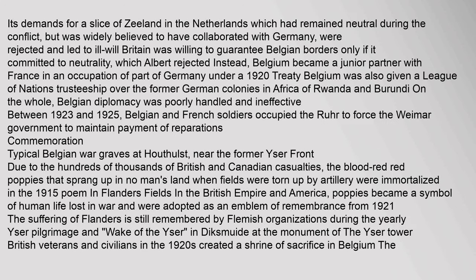Belgium's demands for a slice of Zeeland in the Netherlands, which had remained neutral during the conflict but was widely believed to have collaborated with Germany, were rejected and led to ill will. Britain was willing to guarantee Belgian borders only if it committed to neutrality, which Albert rejected. Instead, Belgium became a junior partner with France in an occupation of part of Germany under a 1920 treaty. Belgium was also given a League of Nations trusteeship over the former German colonies in Africa of Rwanda and Burundi. On the whole, Belgian diplomacy was poorly handled and ineffective. Between 1923 and 1925, Belgian and French soldiers occupied the Ruhr to force the Weimar government to maintain payment of reparations.